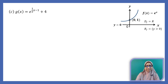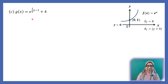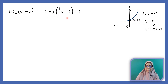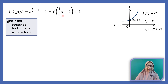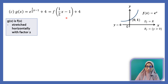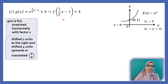The next function is g(x) equals e to the power of (½x minus 1) plus 4. How is g(x) related to f(x)? We can rewrite g(x) as f(½x minus 1) plus 4. The ½x indicates we need to stretch the graph horizontally with factor 2. We equate ½x minus 1 to 0, giving x equals 2, which indicates we need to shift the graph 2 units to the right. Plus 4 means we shift the graph 4 units upwards, or translate by (2, 4).